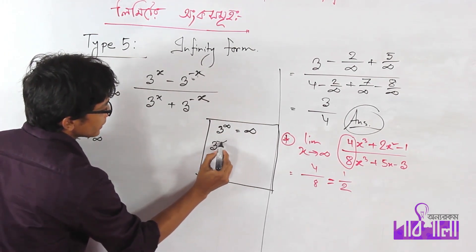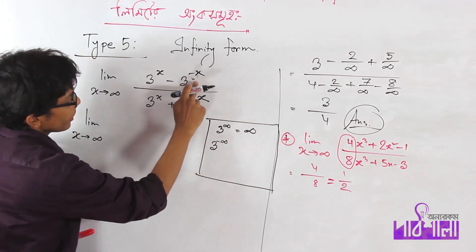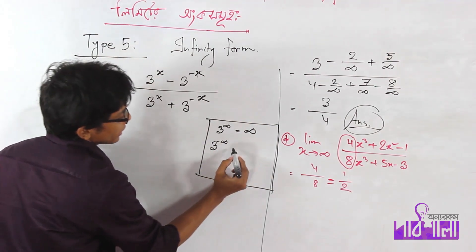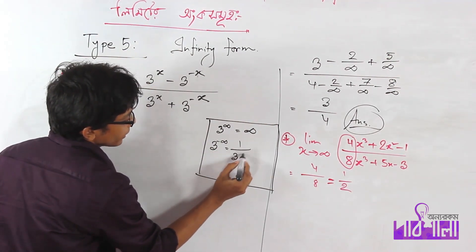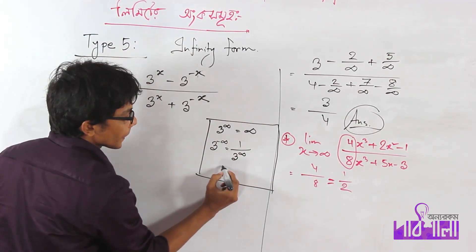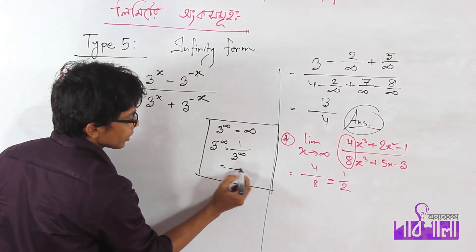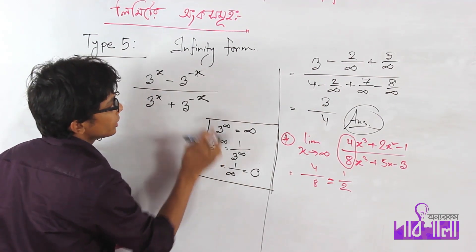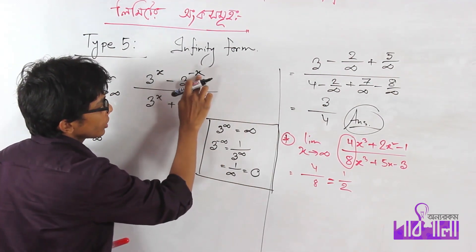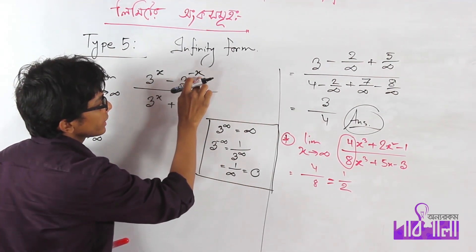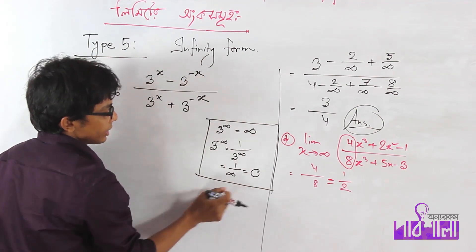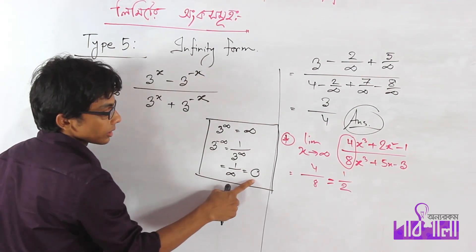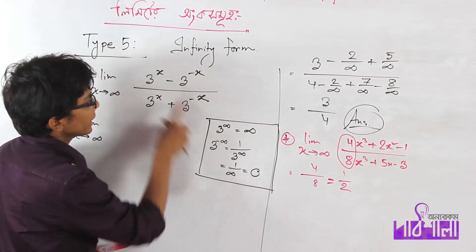We note that 3 to the power minus infinity equals 1 over 3 to the power infinity, which equals 1 over infinity, which means 0. So the 3 to the power minus x terms become 0.